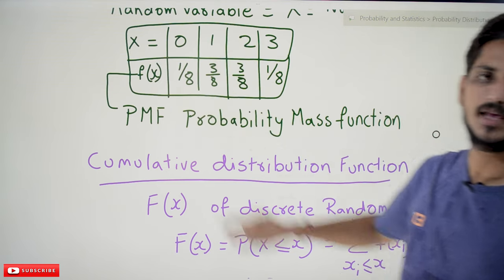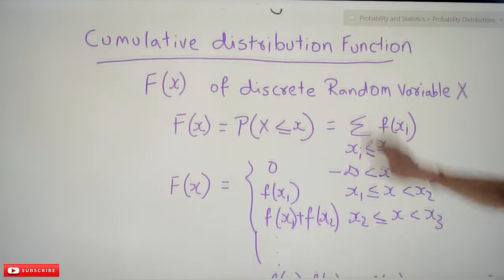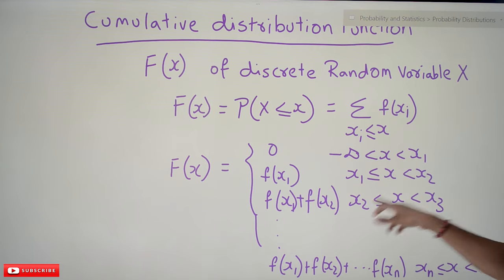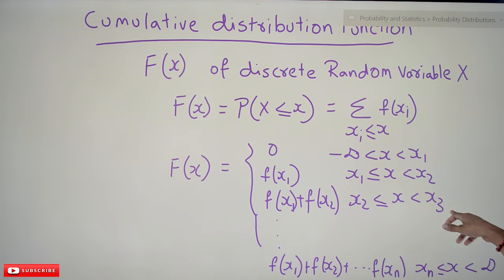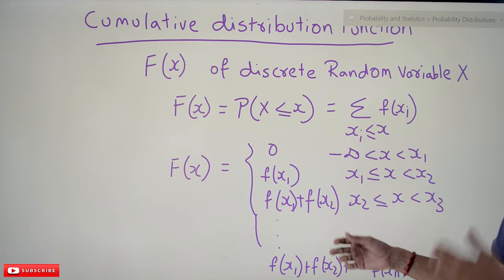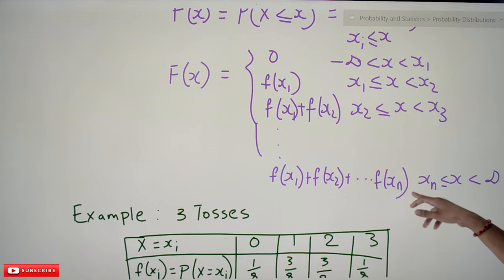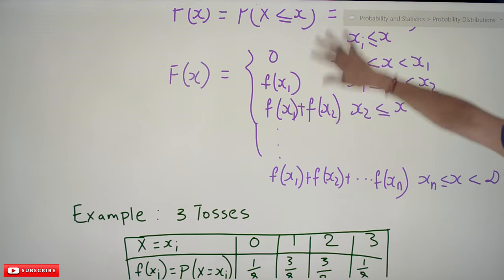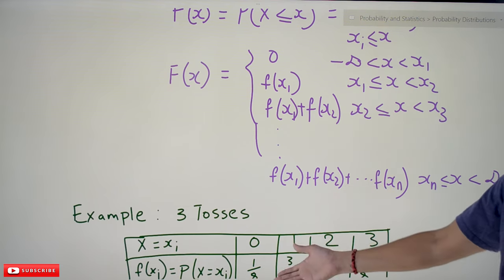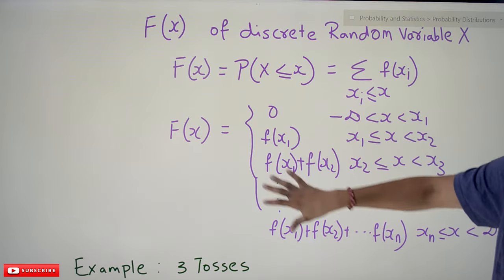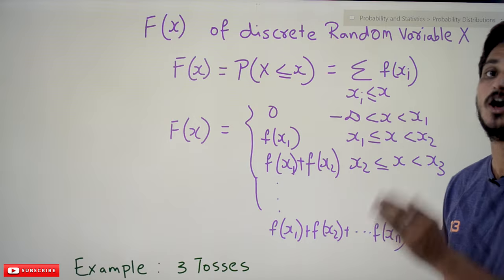For x₁ ≤ x < x₂, what is the probability value? 1/8. So it is given as F(x) = F(x₁) for that range. Similarly for x₂ ≤ x < x₃, the value is F(x₁) + F(x₂) — cumulative values. And for xₙ ≤ x < ∞, the value is F(x₁) + F(x₂) + ... + F(xₙ). This is the general equation for cumulative distribution function for discrete probability or probability mass function.